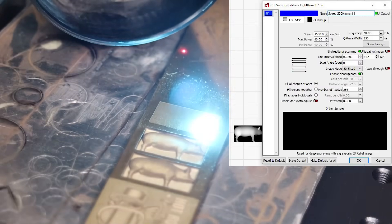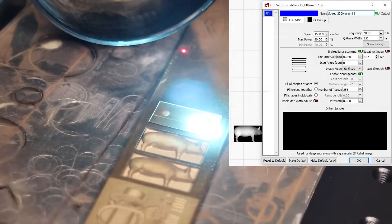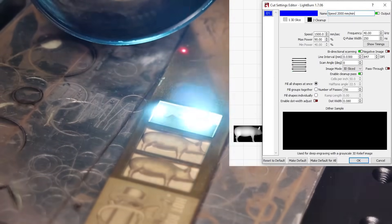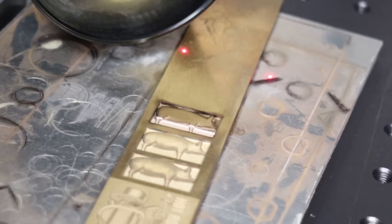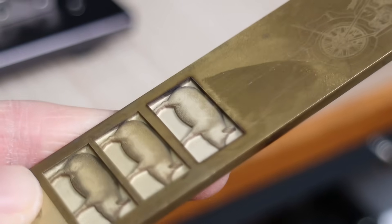To demonstrate this, I performed a deep 3D engraving in brass, using the same settings as my previous tests with 60-watt JPT fiber lasers. Despite using a 100-watt machine, the engraving depth remained the same at 1.3 millimeters.